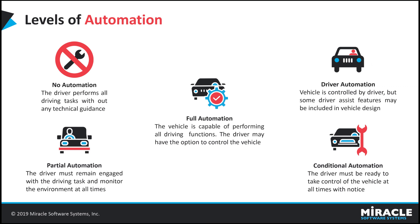Here we have 5 levels of automation: no automation, driver automation, partial automation, conditional automation, and full automation. If a driver performs all the driving tasks without any technical guidance, it is known as no automation — manual cars are an example of this. In driver automation, the vehicle is controlled by drivers with some driver assist features like steering, speed or braking control functionalities. It provides either steering control or accelerating and braking control on an ongoing basis.